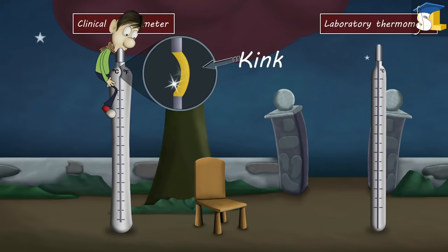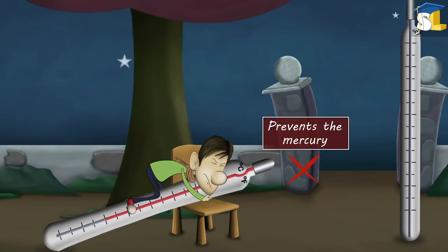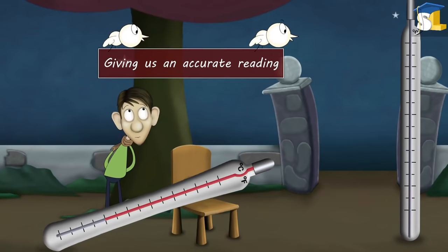A clinical thermometer has a kink. When we check our body temperature, the kink present in it prevents the mercury from falling back down. Thus, helping the thermometer to hold the temperature recorded by it and giving us an accurate reading.